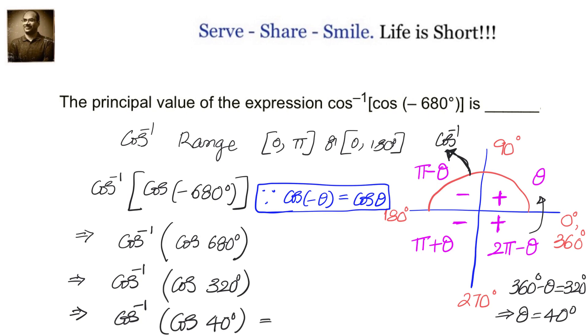That equals 40 degrees, which can also be written as 40 times pi by 180 or 2 pi by 9 radians.